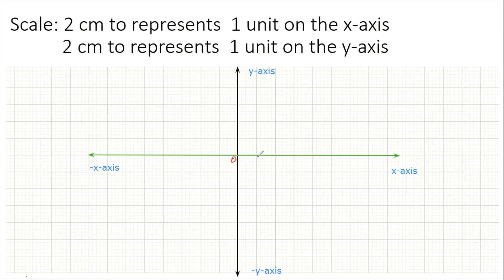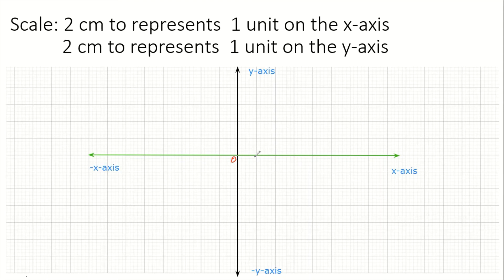Note that it takes five small boxes to make one centimeter, so it takes 10 small boxes to make two centimeters. For every 10 small boxes going horizontally, we put a stroke on our x-axis to represent two centimeters. Count: one, two, three, four, five, six, seven, eight, nine, ten — put that stroke right here.